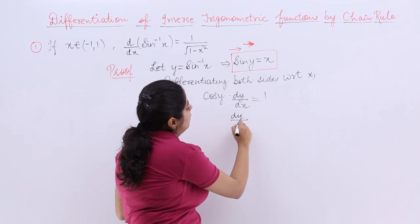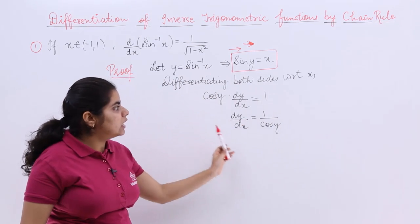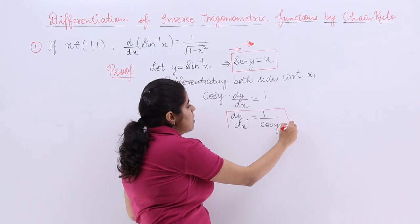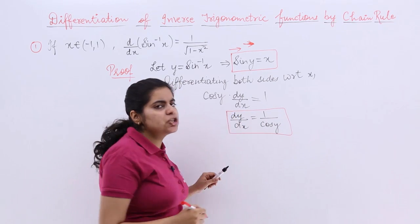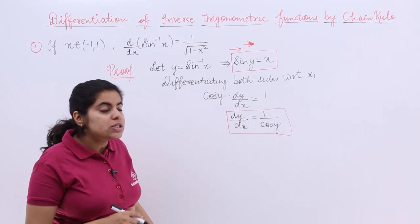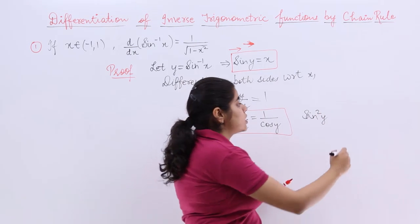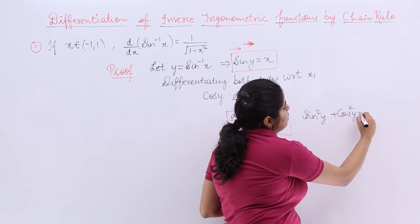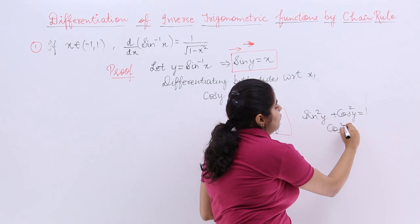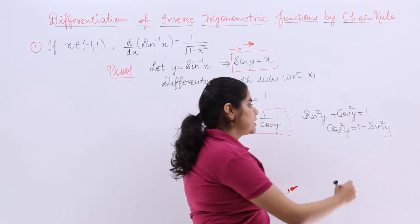Now what is dy by dx from here? It is 1 upon cos y. This can be put in a box, but you see my formula should not be in cos y, it should be in x not in y. So what is sin square y plus cos square y equal to? 1. From here can you take out the formula of cos square y? 1-sin square y. Now what is cos y? Under root 1-sin square y.